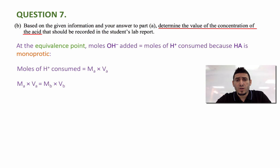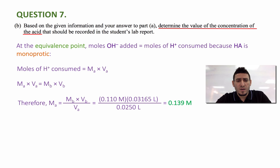Now we have the volume of the acid that's 25.0 milliliter. The molarity of the base is given 0.110 molar and the volume of the base we just found it in part A. So now I can say the molarity of the acid is equal to molarity of the base multiplied by volume of the base divided by volume of the acid. Now replacing these terms by their values I can get that the concentration of the acid is equal to 0.139 molar.